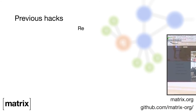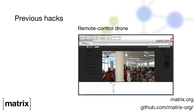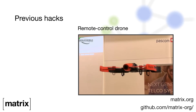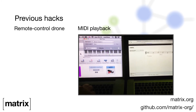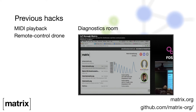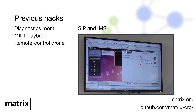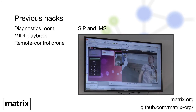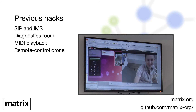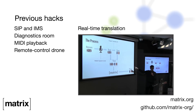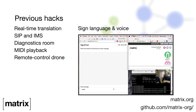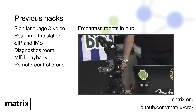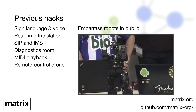Matrix can also be used for more than human communication. We control a drone remotely by sending commands via Matrix, we've sent MIDI data to enable remote playback, and we've sent sensor information from a car to a real-time diagnostics room. At a previous hack, developers connected Matrix to existing services such as SIP and IMS. Another team created a real-time translation tool for messages sent via Matrix. Other hacks include issuing commands by sign language or voice, and controlling a robot's movements via Matrix — which included making it dance the Macarena.